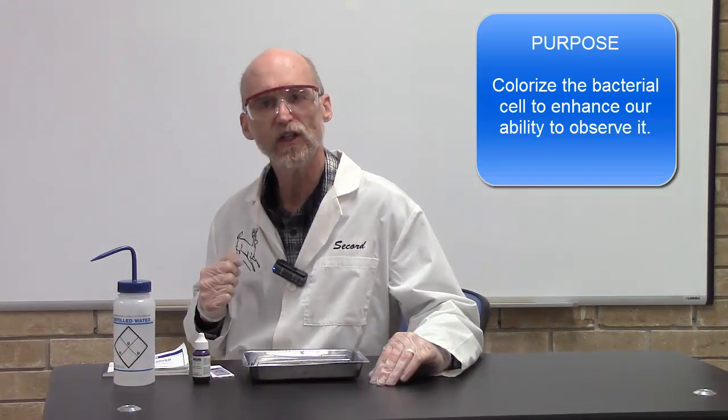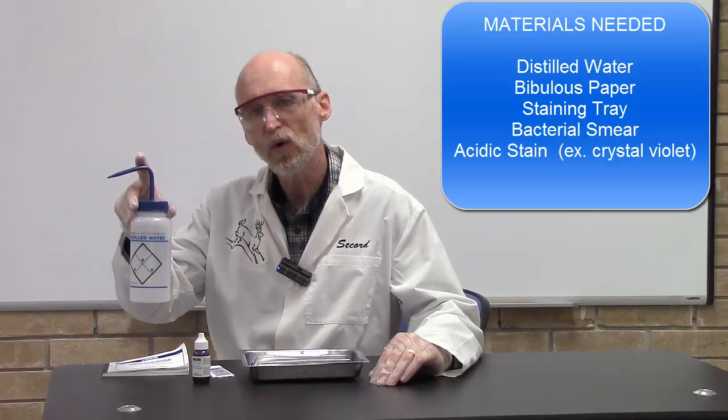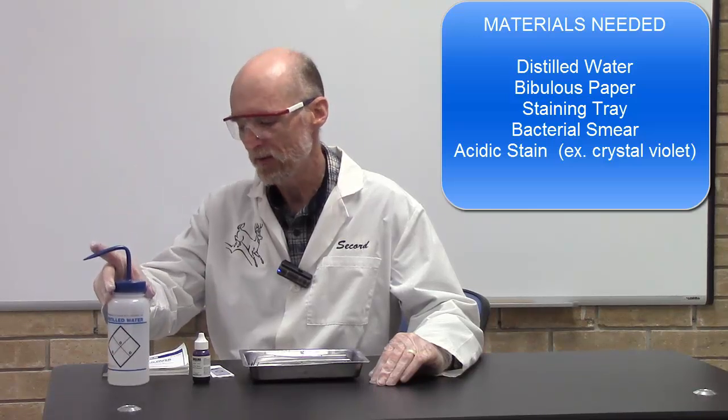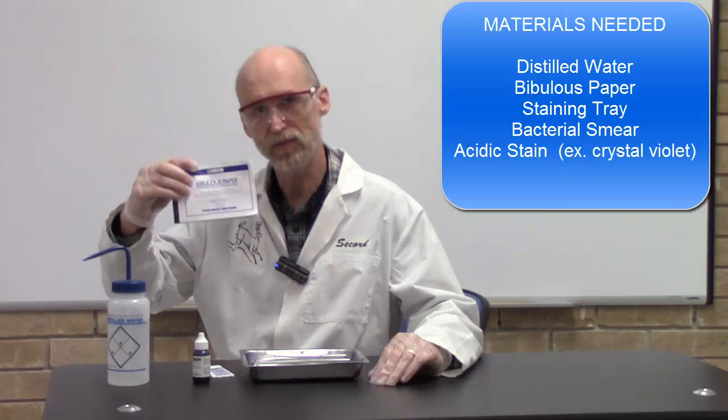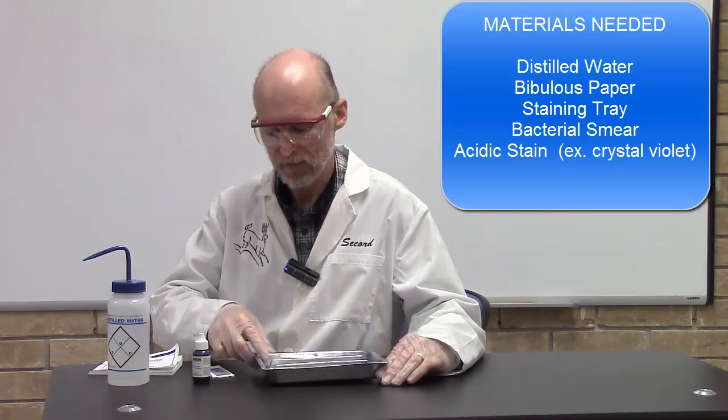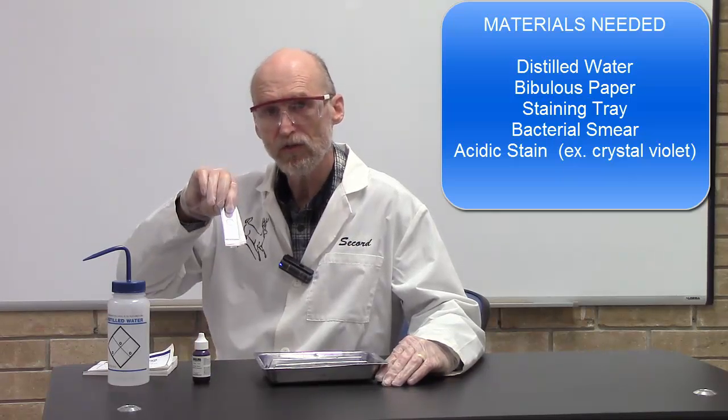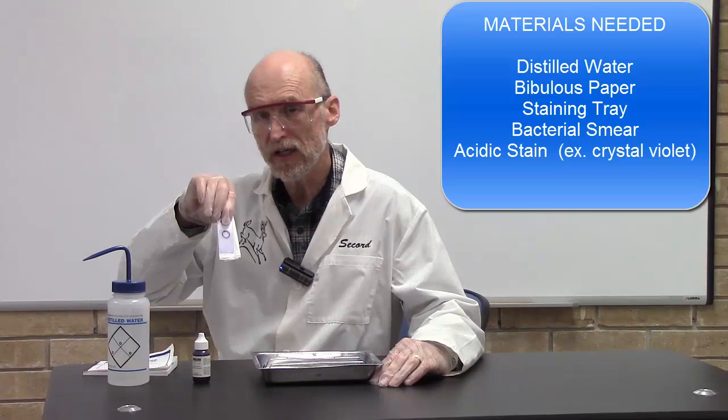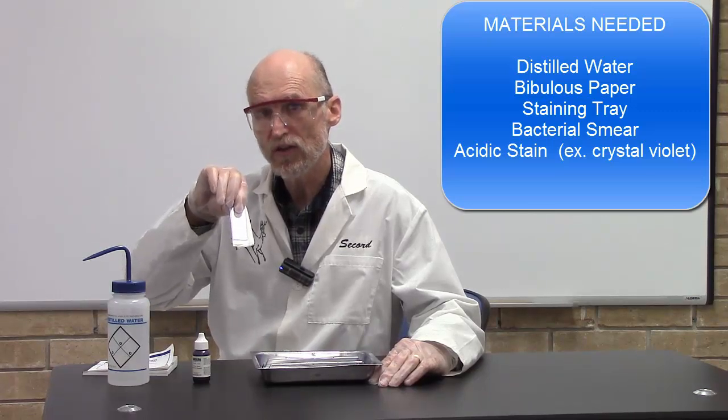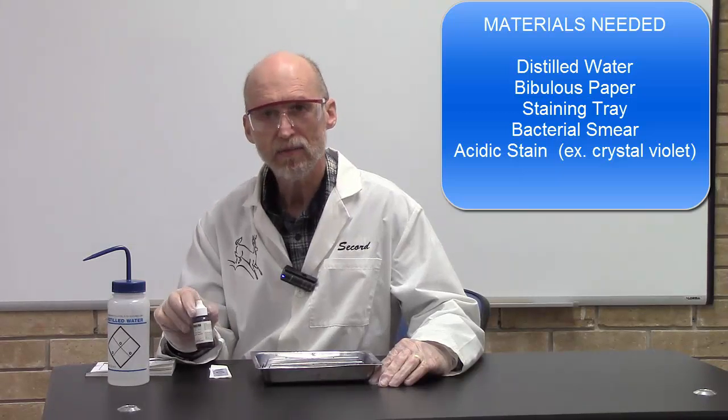Let me go over the materials and equipment you're going to need. First of all, you'll need a bottle of distilled or deionized water. You'll also need a book of bibulous paper, a staining tray, a bacterial smear, which if you don't remember how to do a bacterial smear, go in and review that video. And finally, an acid-based stain.